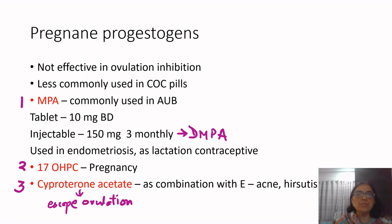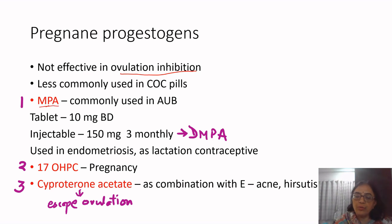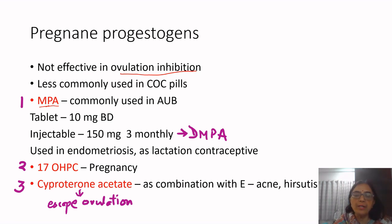In the pregnane group, three molecules are there: medroxyprogesterone acetate (MPA), 17-alpha hydroxyprogesterone caproate, and cyproterone acetate. These are not effective at ovulation inhibition, which is the main mechanism of action of contraceptive pills. That is why MPA is not included in any form of oral contraceptive preparation — it has weaker action against ovulation inhibition, does not suppress the LH surge, and escape ovulations can occur. Pregnanes are not for contraception — remember that.